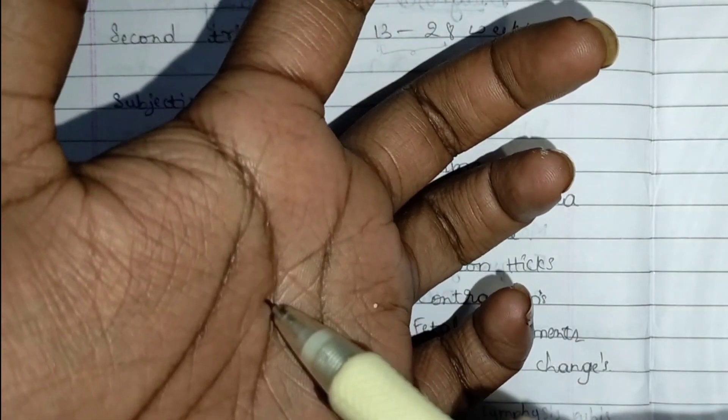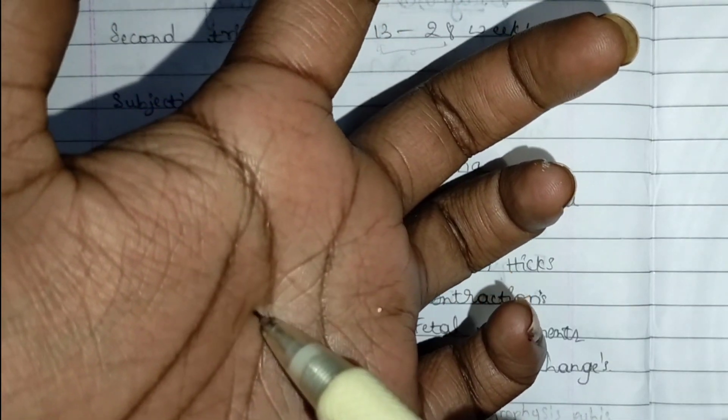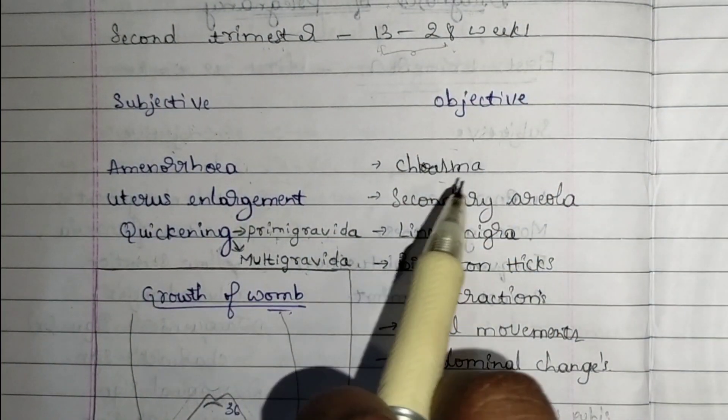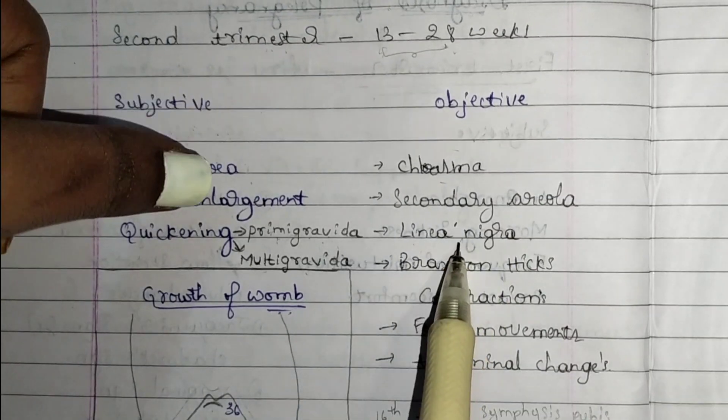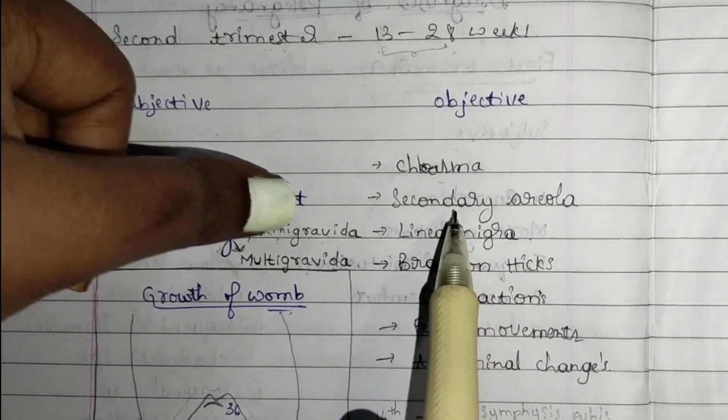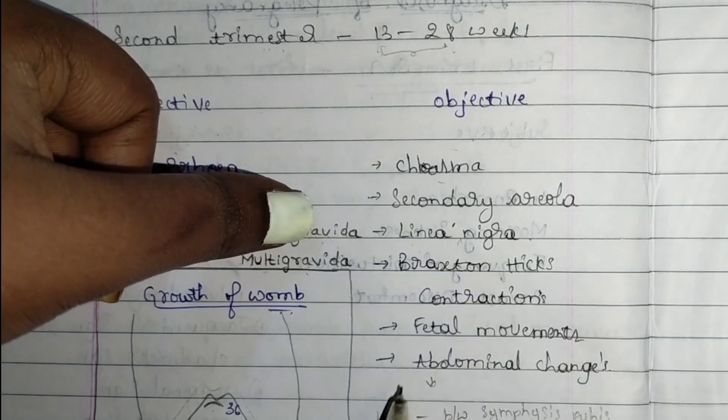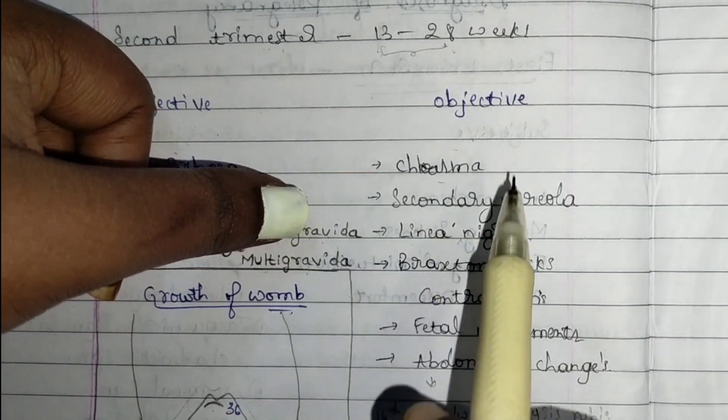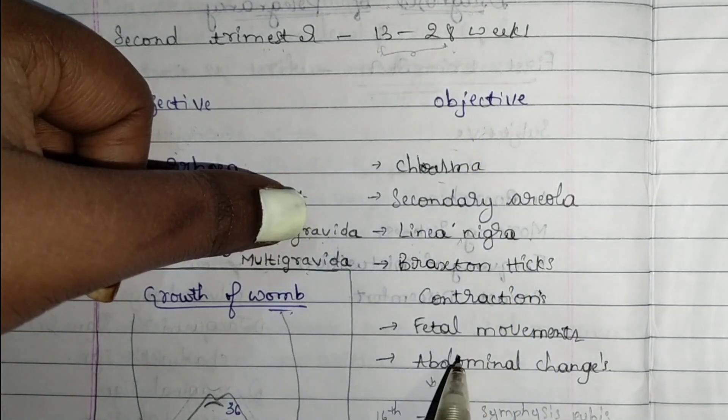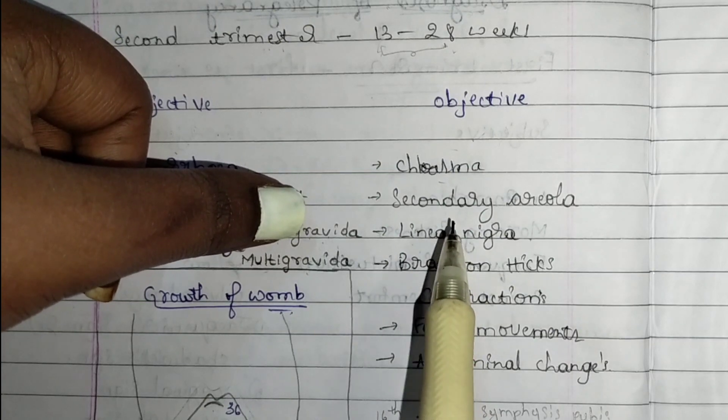Secondary areola is when the pigmentation around the areola from first trimester keeps spreading in another circle. Linea nigra is the line mark or stretch mark from the umbilicus to the symphysis pubis.